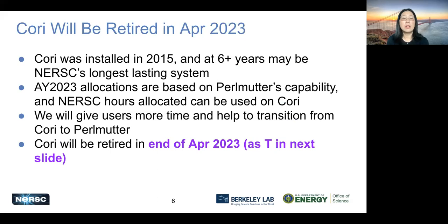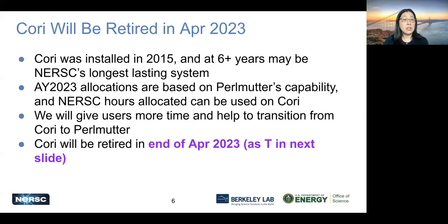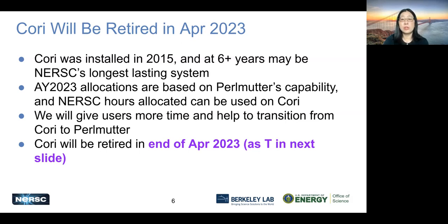Some timeline on Cori. Cori will be retired, as we have announced, at the end of April 2023. It has been here for over six years, installed in 2015 — it could be the longest-lasting system at NERSC. We do allocate for AY 2023 all based on Perlmutter's capability. Your hours allocated for Perlmutter can be used on Cori on CPU. You have CPU allocation hours and GPU allocation hours, and the CPU hours can be used on Cori. We give users time and help to transition.